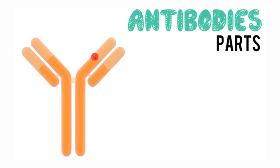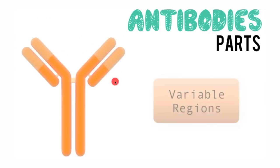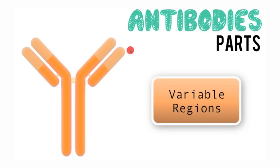The lighter yellow or lighter orange areas are variable because they change according to the antigen — the bad guy — that you want to tag. That is a very important and key characteristic of antibodies: they're able to change this variable region depending on the antigen they want to tag.